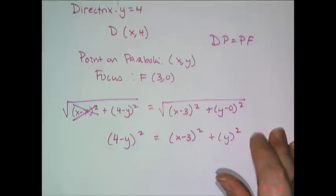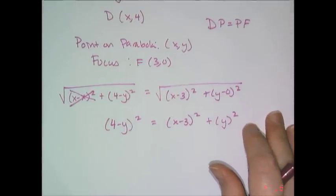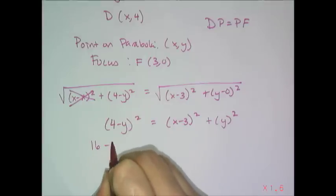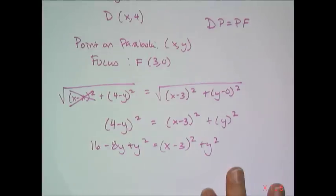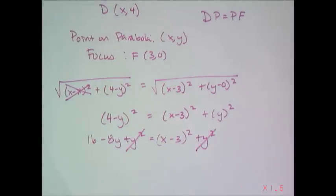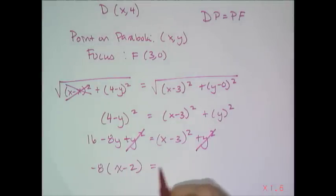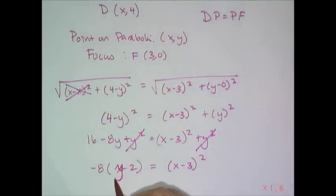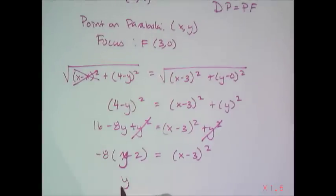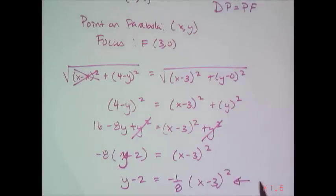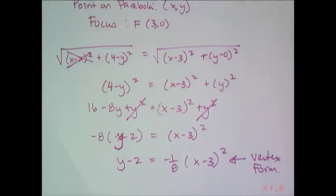I need to put this in a more familiar format. I multiply out the left side, and the y² terms cancel. I can factor out a negative 8, and after correcting — it's y minus 2, not x minus 2 — I get: y minus 2 equals negative one-eighth times (x minus 3)². That is vertex form.